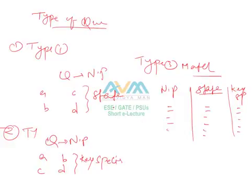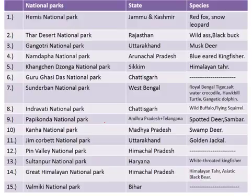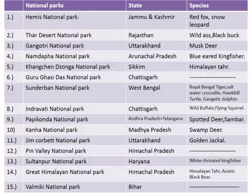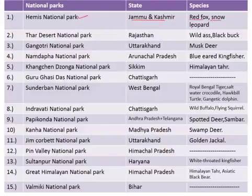Here are some important national parks of India. The first is Hemis National Park, situated in the state of Jammu and Kashmir, famous for the red fox and the snow leopard. Second is the Desert National Park, situated in the state of Rajasthan, famous for the wild ass and the black buck.